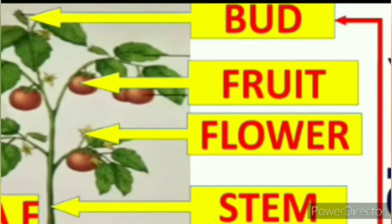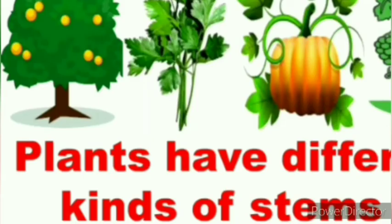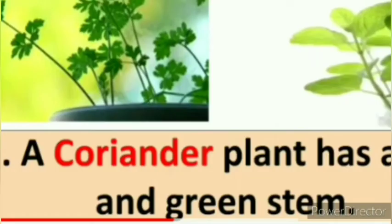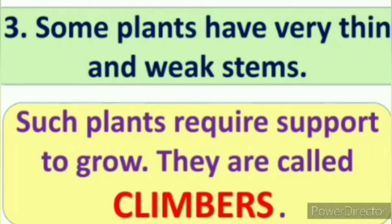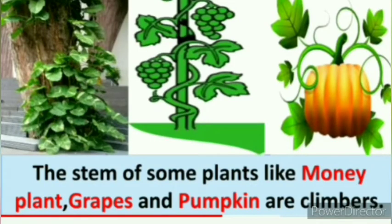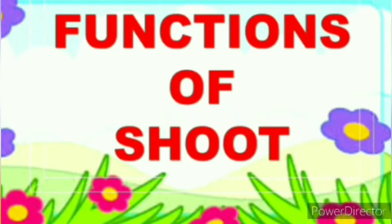Stems are of different kinds. Stem is broadly classified into three categories. First, soft and green stem, which prepares food for the plant — coriander is an example. Second, hard and woody stem, also known as trunk, like banyan and teak, which have a strong and woody stem. Third, weak stem — weak stem cannot hold the plant upright, so it needs support to climb, like pumpkin, grapes, vine, etc.